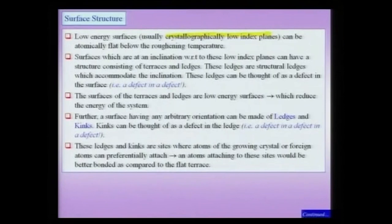If I go off this low angle — meaning I no longer work with low-index planes but incline away from them — then the structure of these planes can be described by terraces and ledges. These ledges are structural ledges: they are not random but accommodate the inclination. Just like dislocations accommodating inclination between two grains in low-angle grain boundaries, an inclination of the surface is accommodated by these structural ledges which form on the surface.